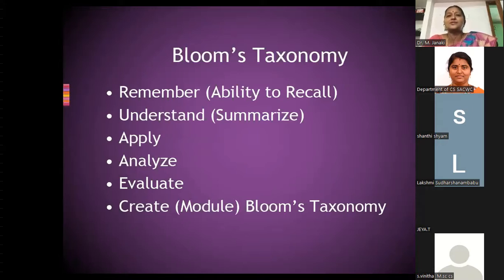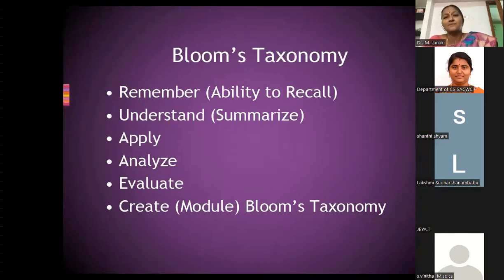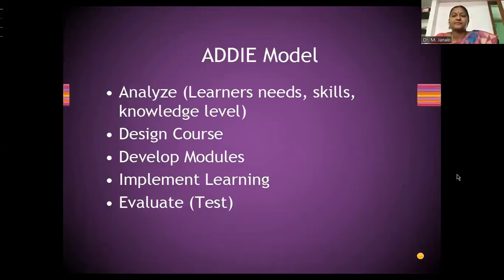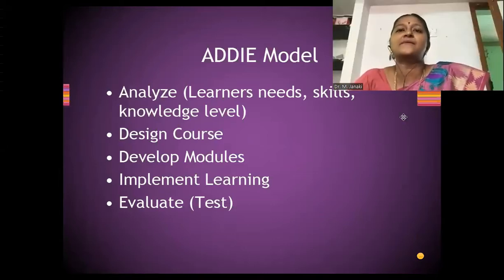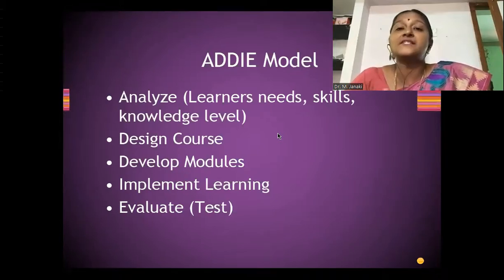Once the course is developed, they will develop the modules — the usual practice is five units. The issue is that five units don't cover the entire book. When preparing for NET or SET exams, the same syllabus and same books feel much harder, because the university syllabus covers only part of the chapters — around 18 to 22 out of 25 chapters. But the national or state eligibility tests cover the syllabus as a whole, which is why we feel it's harder.